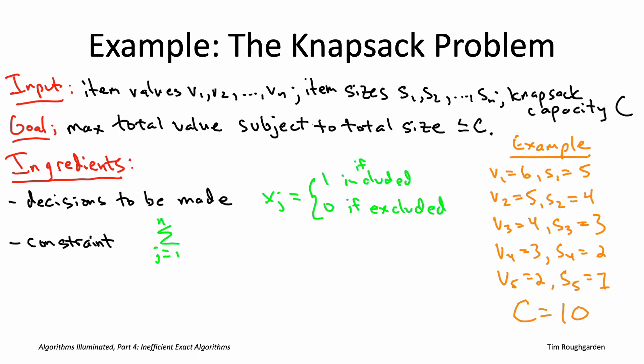We sum over the items, and then a given item contributes sj times xj. Notice that's 0 if xj is 0, and it's sj, the size of item j, if j is included. The final part of the problem specification is what it is we want. What is the objective function?